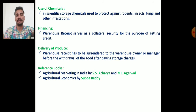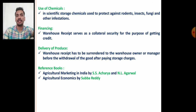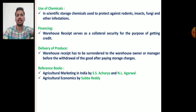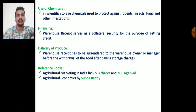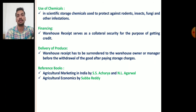Warehouses also use chemicals to protect stored commodities against rodents, insects, fungi, bacteria, and other infestations. For delivery of produce, after submitting the warehouse receipt the produce can be withdrawn; the warehouse receipt must be surrendered to the warehouse owner or manager before withdrawal of the goods, after paying the storage charges.